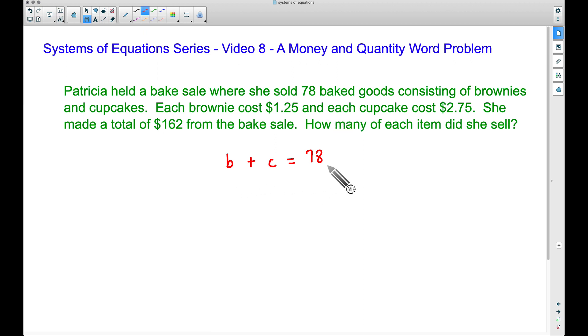Now let's form another one. Each brownie costs $1.25. Since b is the number of brownies, we can take $1.25 and multiply it by the number of brownies to figure out how much money she made off of just the brownies.